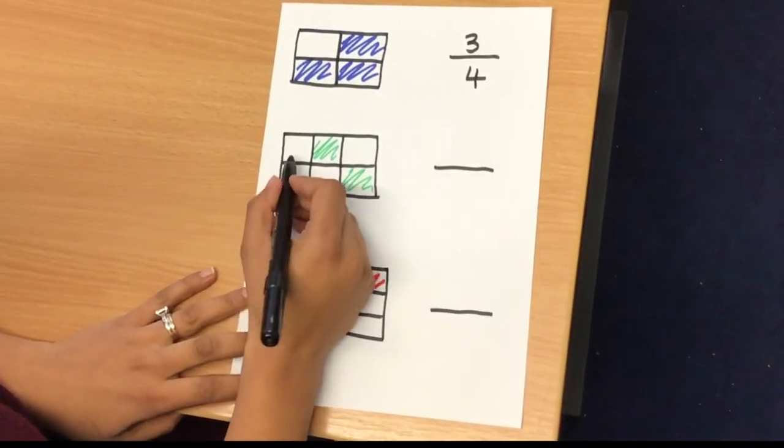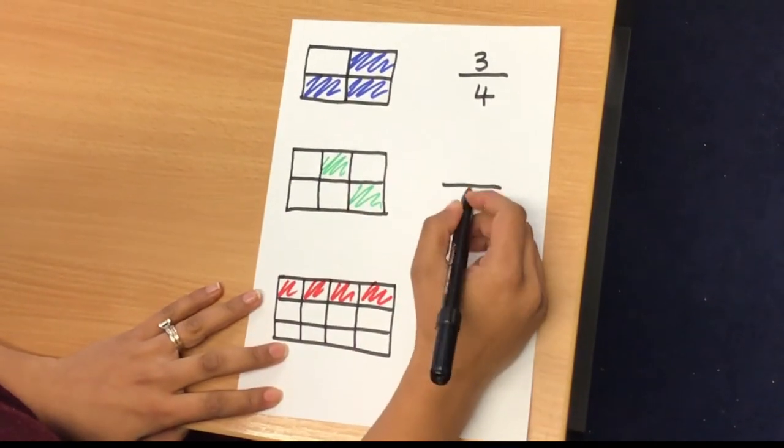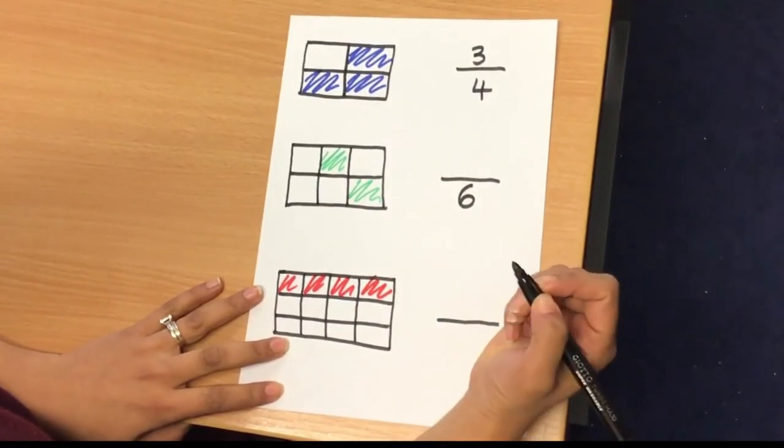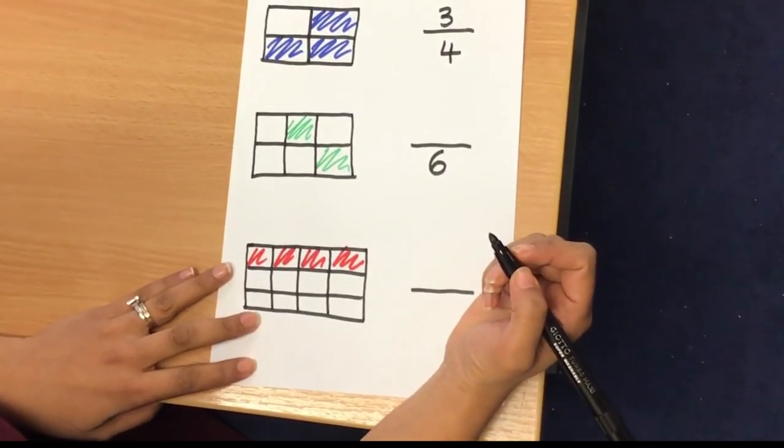The next one, I have one, two, three, four, five, six in total. Therefore, my denominator is six. Notice how I always start with counting how many parts there are in total.